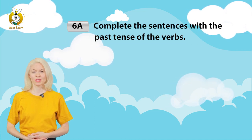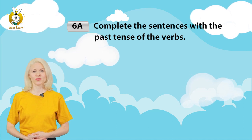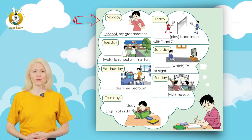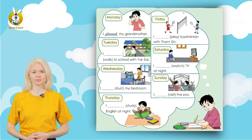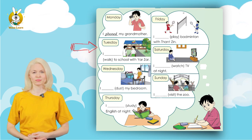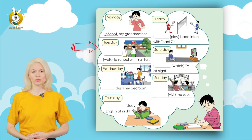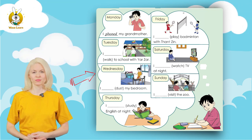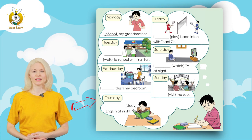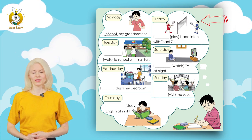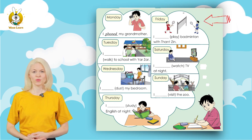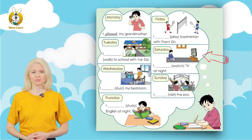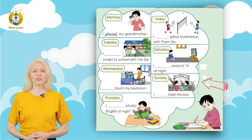Six A. Complete the sentences with the past tense of the verbs. Monday: I phoned my grandmother. Tuesday: I walked to school with Yaza. Wednesday: I dusted my bedroom. Thursday: I studied English at night. Friday: I played badminton with Thansen. Saturday: I watched TV at night. Sunday: I visited the zoo.